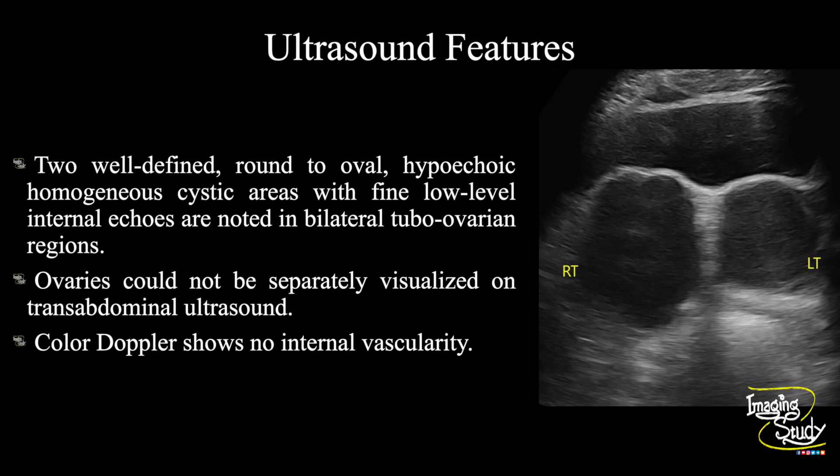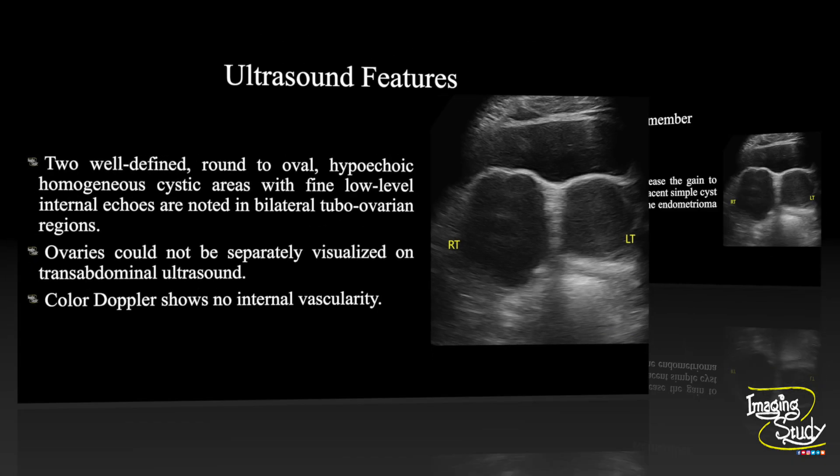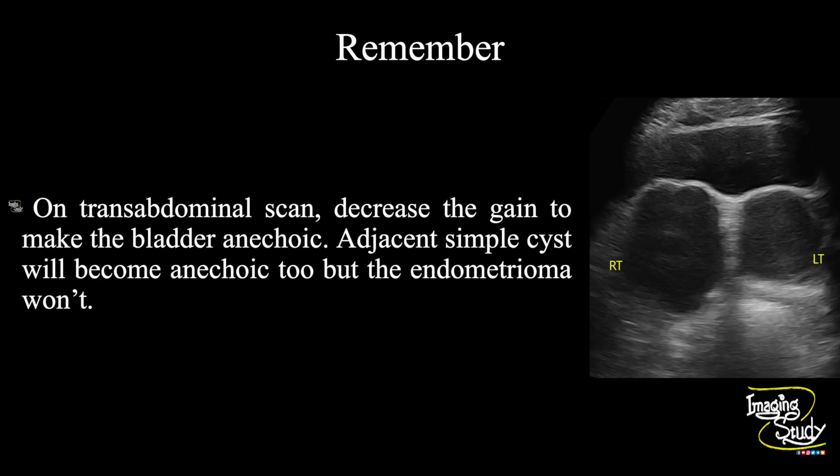In summary, two well-defined round-to-oval hypoechoic homogenous cystic areas with fine low-level internal echoes are noted in bilateral tubo-ovarian regions. Ovaries could not be separately visualized on transabdominal ultrasound. Color Doppler shows no internal vascularity. These features are concluded as a case of bilateral adnexal endometriomas or chocolate cysts.